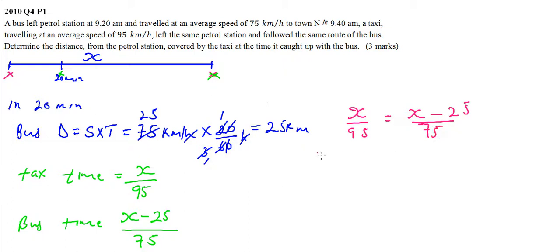When you cross multiply, you get 75X equals 95X minus 2375. Take 95X to this side and you find that 20X equals 2375.